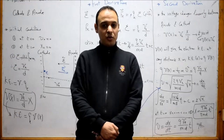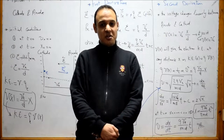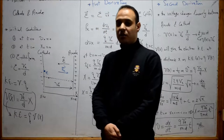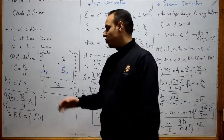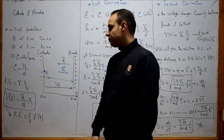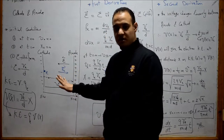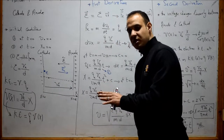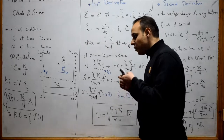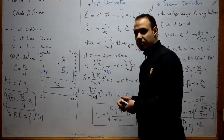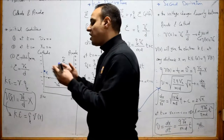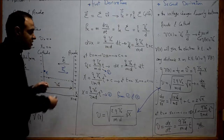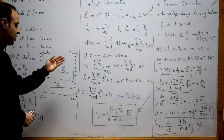Welcome back to our electronics course. In this lecture we will revise the concept of the motion of the electron, or any charged particle, between the cathode and the anode. We took this before in lecture number 2. In this lecture we will revise this concept and derive the equations using another method, based on the kinetic energy concept given to the electron because of the potential between the two electrodes, the cathode and the anode.